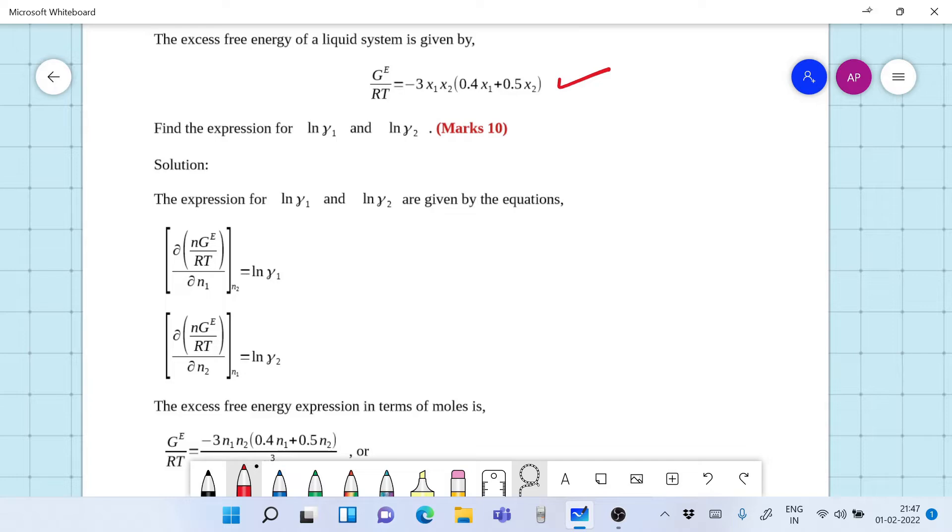Now the expression for ln gamma 1 and gamma 2 would be given by partial derivative. Now what is n? n is the total number of moles of the mixture partial nge by RT by partial n1 holding n2 constant. Now this is for a binary system.